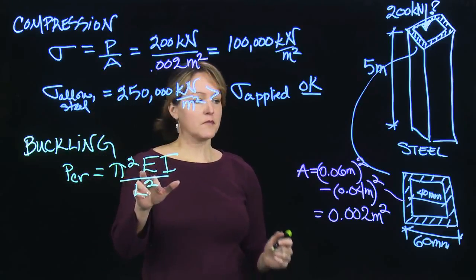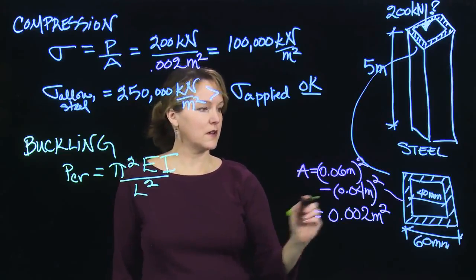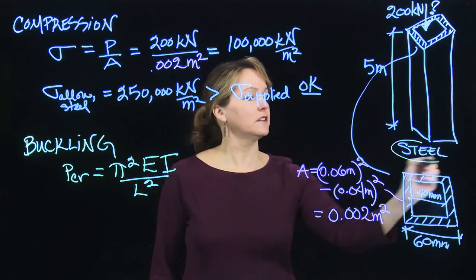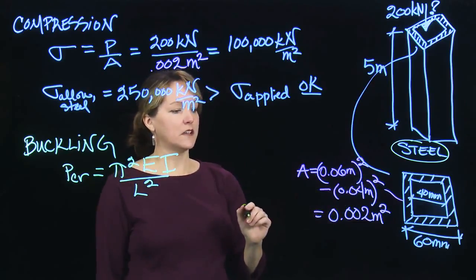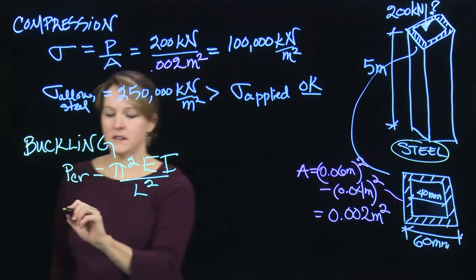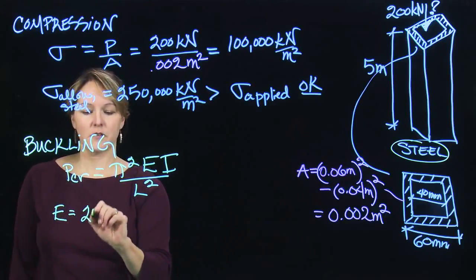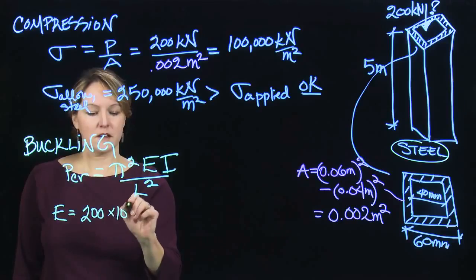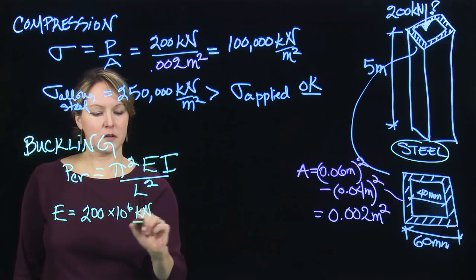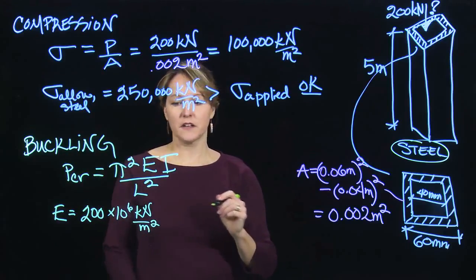Pi is just a constant. E is the modulus of elasticity of the material. So we're talking about steel, and I can look up for steel and figure out what the modulus of elasticity is for steel. So E is the modulus of elasticity, and for steel that is 200 times 10 to the sixth kilonewtons per meter squared, a pretty high number. That's just a function of the material.